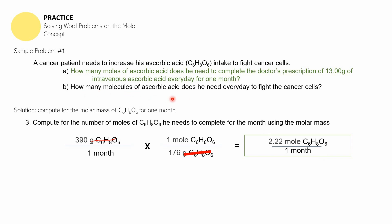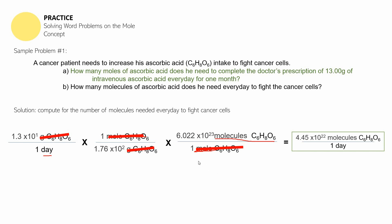Now the question is: how many molecules of ascorbic acid does he need every day to fight the cancer cells? Now that we know the moles per month, we proceed to solve for the number of molecules of ascorbic acid he needs every day. We'll be converting 13 grams — the daily dose — into molecules.